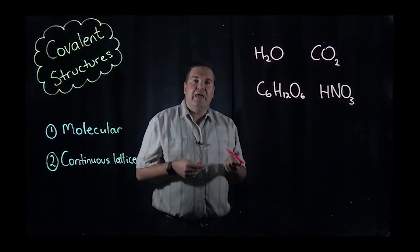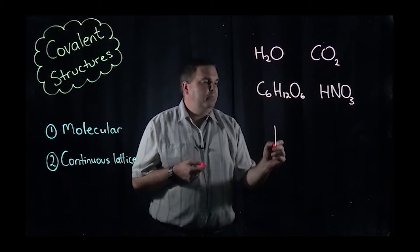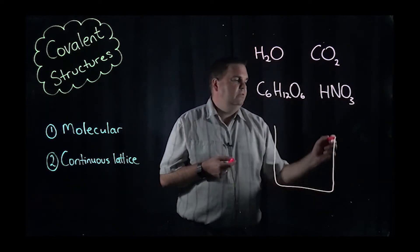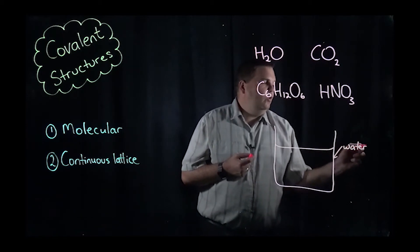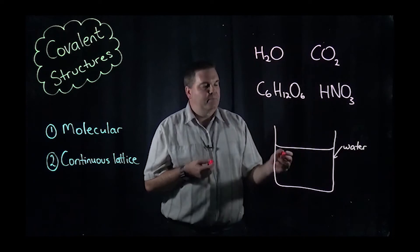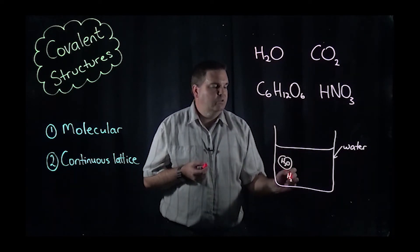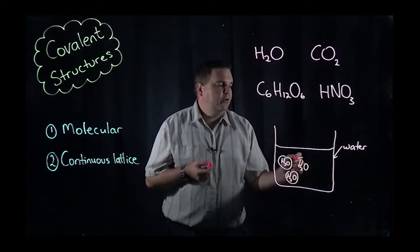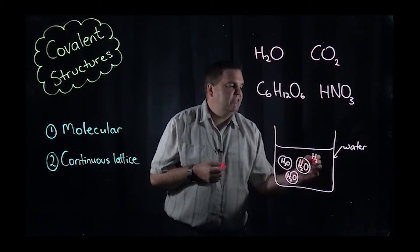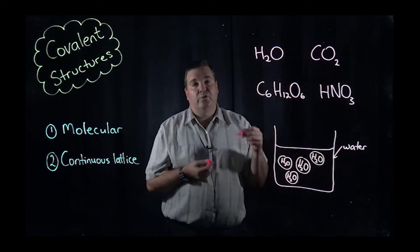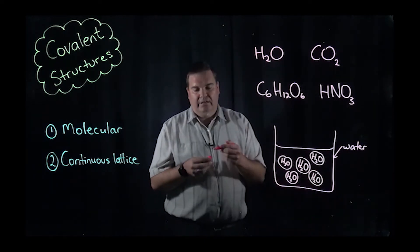What that means is that they all exist independently of each other. If we have a beaker of water here, for example, that means within this beaker of water, however many mils it is, we've got all these little individual water molecules. Whereas for an ionic substance, these were all bonded together via ionic bonds. Here, these actually exist and are bonded together by what are called secondary bonds.